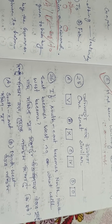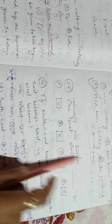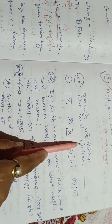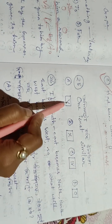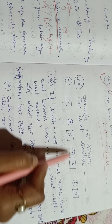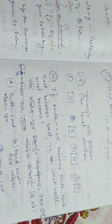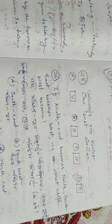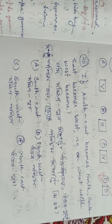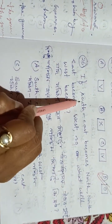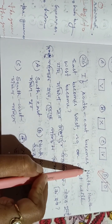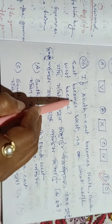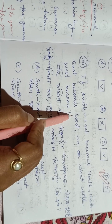The first question is about directions. If South-East becomes North, and North-East becomes West, then what will West become? Next, South is important. If South-East becomes North, and North-East becomes West...